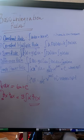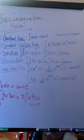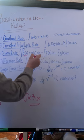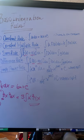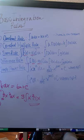The third and fourth rules are the sum and difference rules. If we have a function that's a sum or difference, we can separate them and integrate them separately.